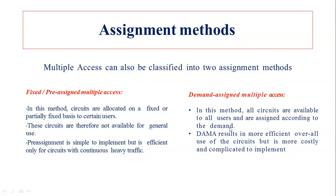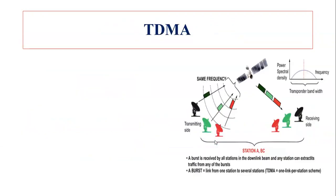The second method is Demand Assigned Multiple Access. All circuits are available for all users, but on a demand basis — whoever is demanding will be served. We call this DAMA — Demand Assigned Multiple Access. Where there is a lot of demand, that will be served. Demand Assigned Multiple Access is more efficient for overall use of circuits, but more costly to handle that many users.